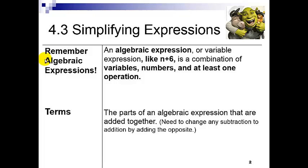Remember an algebraic expression is a variable expression like n plus 6, which is a combination of variables, numbers, and at least one operation. You should have this already written down. The parts of an algebraic expression that are added together are called terms.